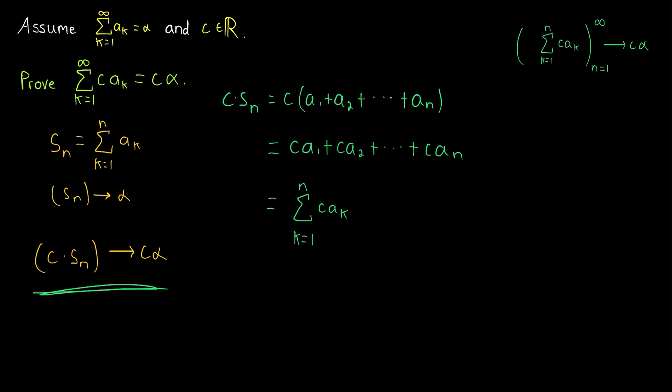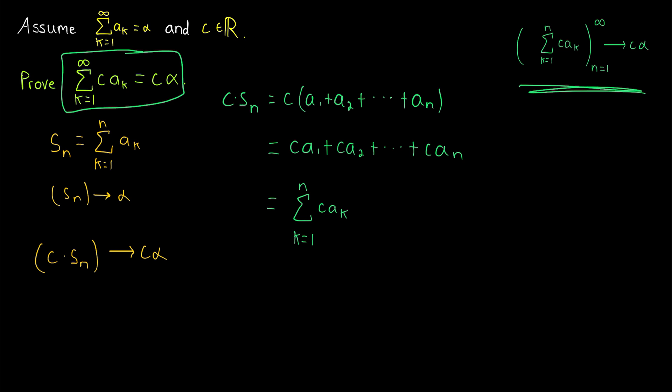What we just did was show that the nth term of c times Sn for an arbitrary n equals the nth term of the sequence of partial sums of Σc·aₖ. Thus, since the sequence c times Sn converges to c times alpha, the sequence of partial sums does as well — which by definition means that the series converges to c times alpha, since its sequence of partial sums does.